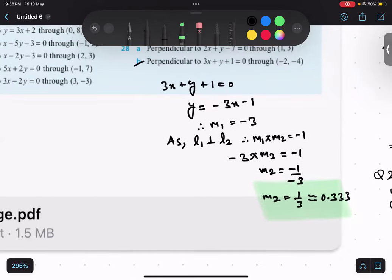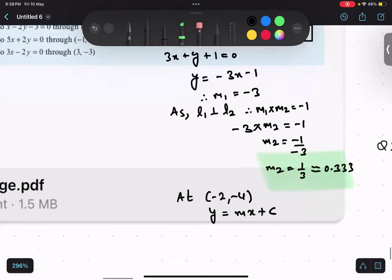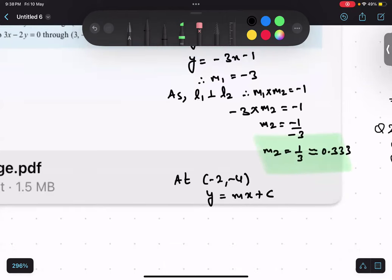Now, the question is it is passing through minus 2 comma minus 4. So, y equals to mx plus c. Our objective is to find c. So, minus 4, m value is, you tell me what should I take? 0.333. You can take 1 upon 3 also. Yes. x value is minus 2 plus c.